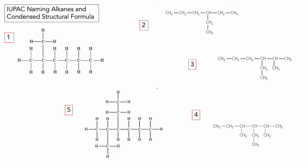Using those rules, let's name some molecules. For number one, draw these structural formulae in your book and we'll work through them. Looking at number one: I count one, two, three, four, five, six carbons in the straight chain — so it's hexane. It's all single bonds, so it's an alkane. We also have a single-carbon side group attached — one carbon means that's a methyl group.